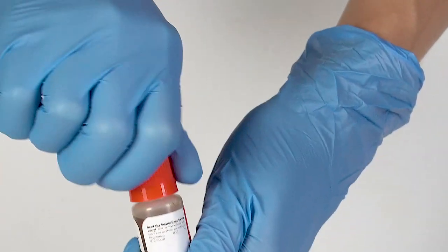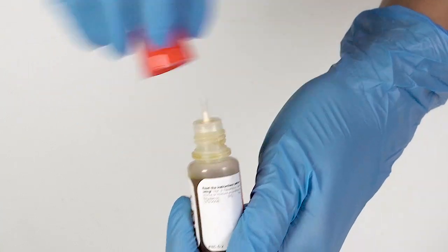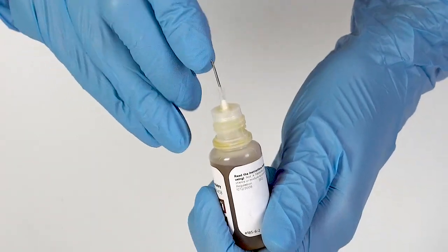To open a bottle containing a reagent, push the cap down and turn it. Pierce the bottle nozzle with an unbent paper clip.